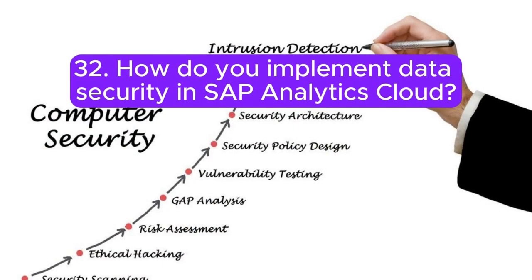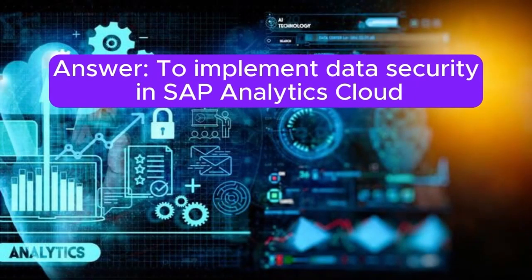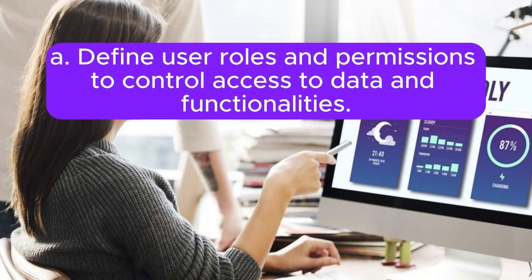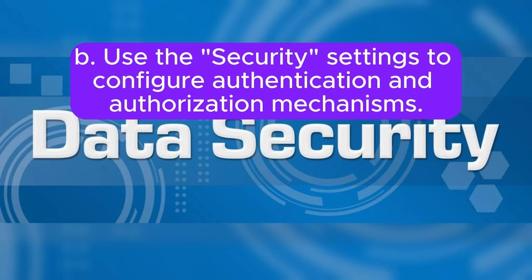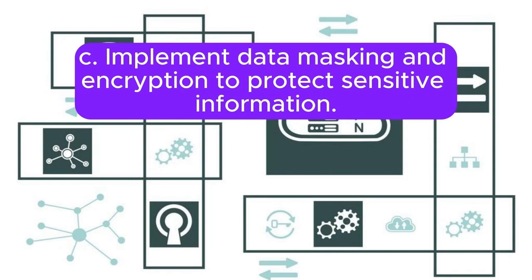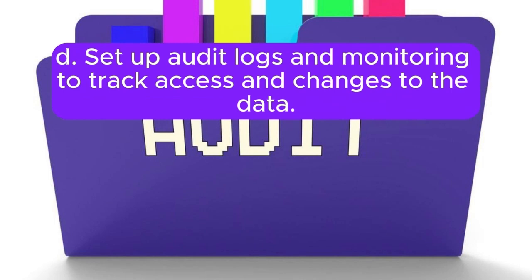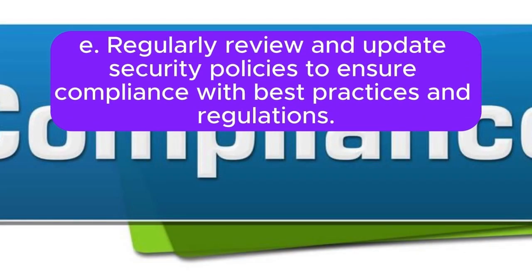Question 32: How do you implement data security in SAP Analytics Cloud? Answer: To implement data security in SAP Analytics Cloud: A. Define user roles and permissions to control access to data and functionalities. B. Use the security settings to configure authentication and authorization mechanisms. C. Implement data masking and encryption to protect sensitive information. D. Set up audit logs and monitoring to track access and changes to the data. E. Regularly review and update security policies to ensure compliance with best practices and regulations.